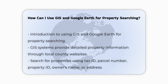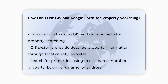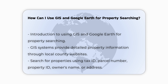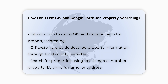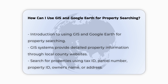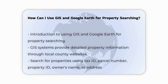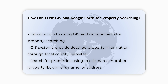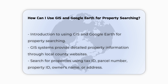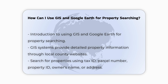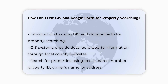Using GIS for property search. GIS systems, often provided by local counties, offer detailed information about properties. You can search for a property using the tax ID number, parcel number, property ID number, owner's name, or address. For example, if you are searching for a property in McDowell County, North Carolina, you would type "McDowell County GIS" into your search engine to find the specific GIS website for that county.